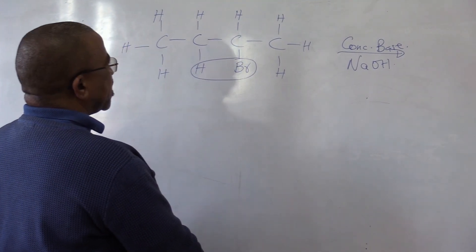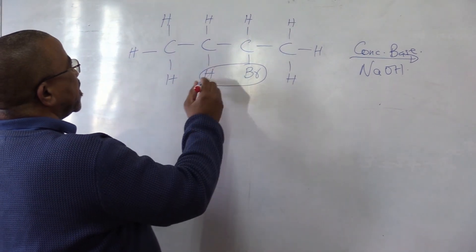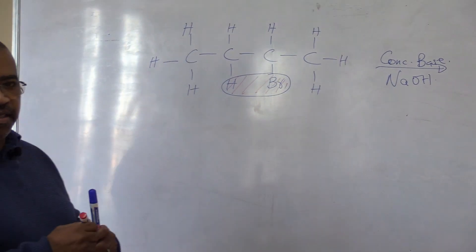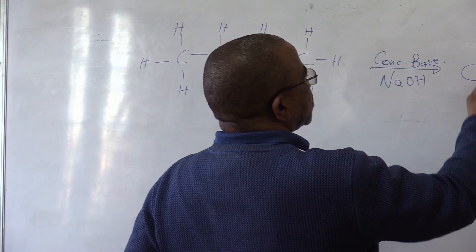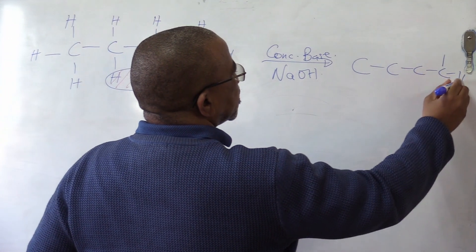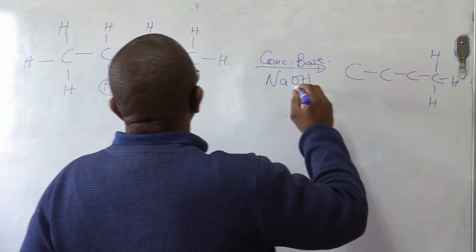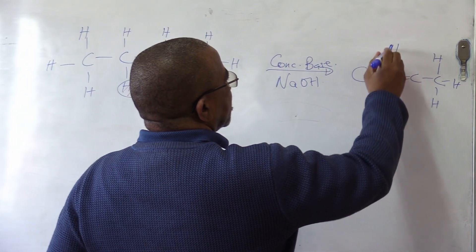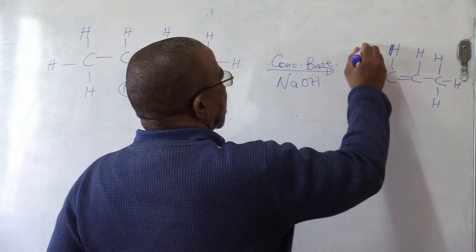So we'll have LOPR — total loss of H. We'll have this being eliminated. So we'll be left with one, two, three, four carbons with hydrogens and a double bond. Then we'll say eliminated.